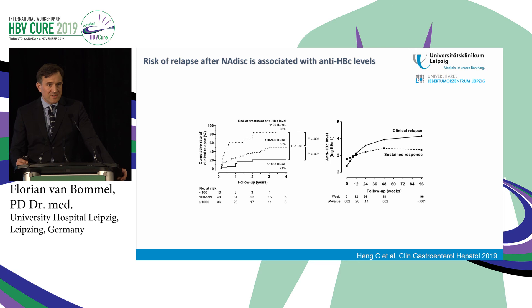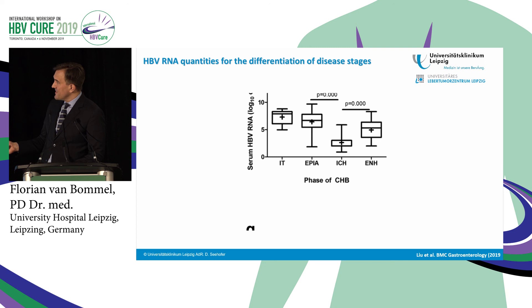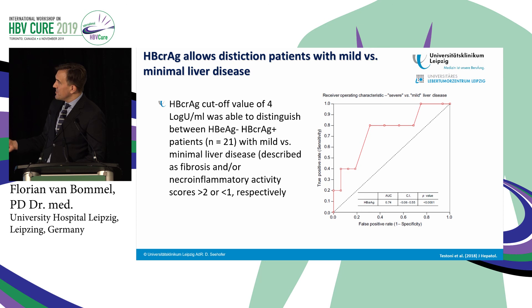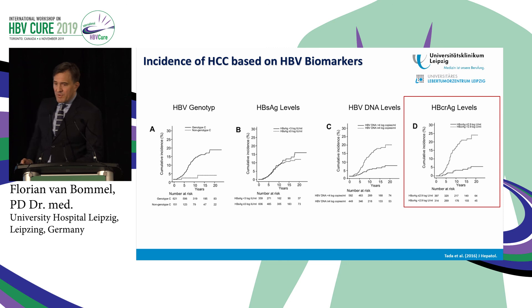For differentiation of disease stages, RNA is very helpful — highly significant in distinguishing inactive carriers from all active forms of disease, more so than DNA alone. Core-related antigen allows distinction between patients with mild and histologically advanced disease and is a marker for HCC. In one study, core-related antigen levels were strongly associated with HCC incidence, though this needs confirmation in European patients as it comes from Asia.